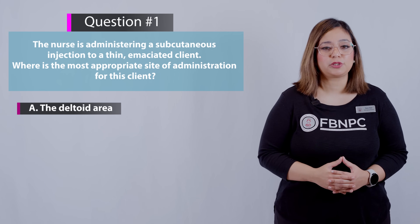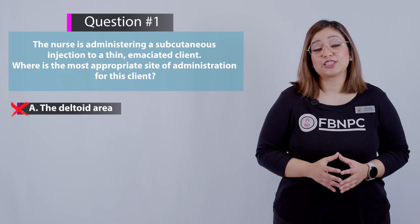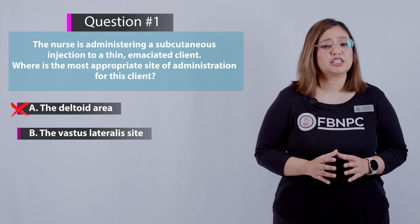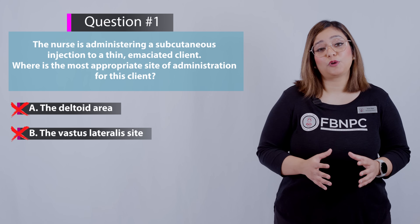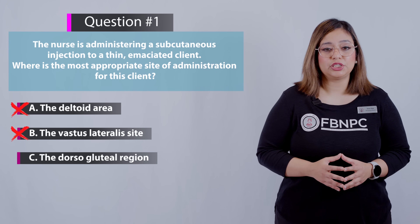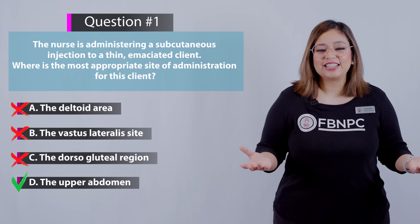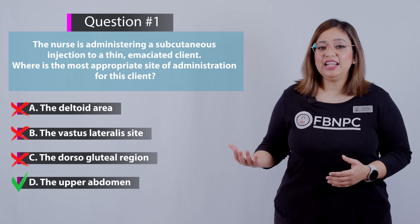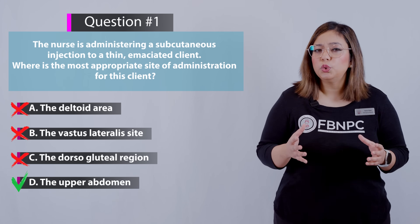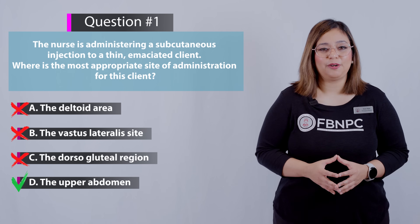Option A — the deltoid area — is not an appropriate site for subcutaneous injection; it is rather a site for intramuscular injection. Option B — the vastus lateralis — is also not appropriate for subcutaneous injection; it is used for intramuscular injection. Option C — the dorsogluteal region — is also incorrect because that site is used for intramuscular injection. The correct answer is D — the upper abdominal area. The client may have insufficient tissue for subcutaneous injection because they are thin and emaciated, so the abdominal area is the best site for these patients.